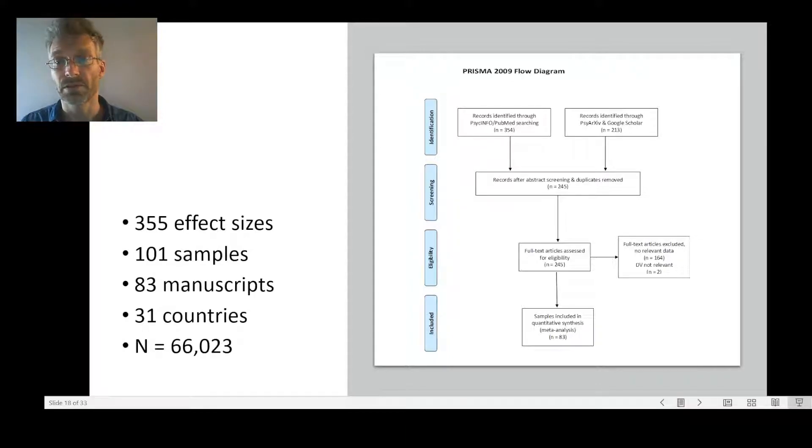To show the incredible amount of research that has gone into this, we were able, in the span of less than a year, to identify 83 manuscripts based on 101 samples, totaling at 355 effect sizes. That's an incredible amount of work and allows us to pull all this information together. It's research that has been conducted in 31 countries.